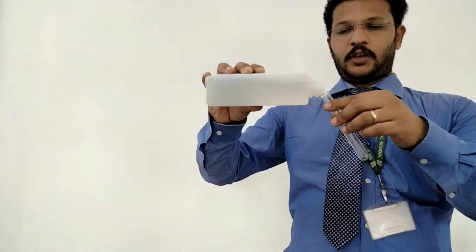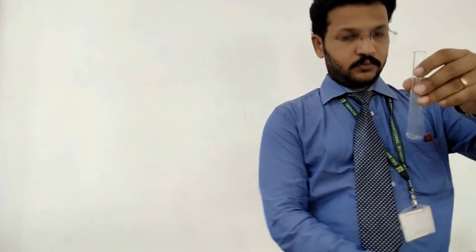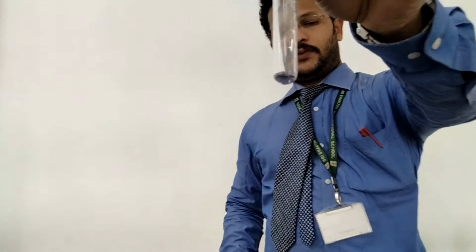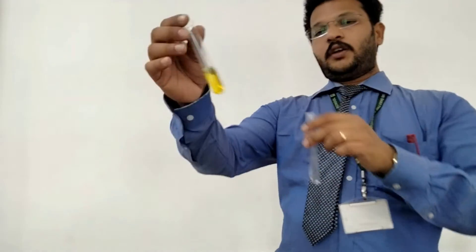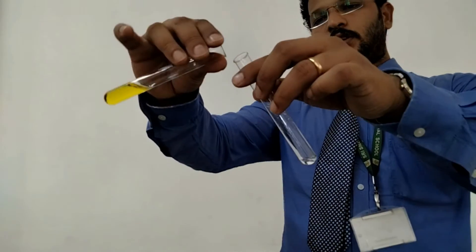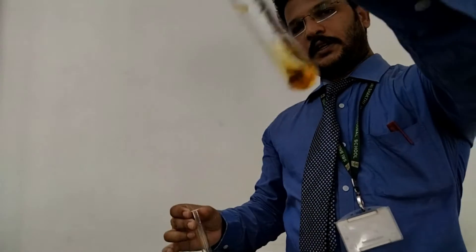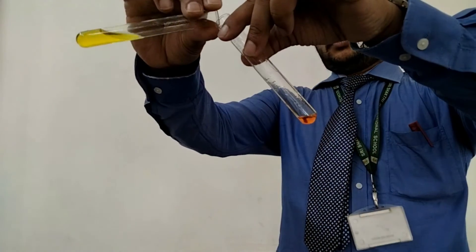Another chemical test for ethanol: taking a small amount of alcohol, to this I am going to add ceric ammonium nitrate. The color of ceric ammonium nitrate is yellow in color. When I am adding this to alcohol, it will turn wine red color.